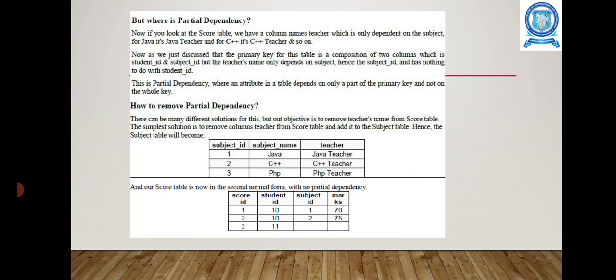A partial dependency is where an attribute in a table depends only on a part of the primary key and not the whole key. To remove this partial dependency, the objective is to remove the teacher's name from the score table. The simple solution is to remove the column 'teacher' from the score table and add it to the subject table.